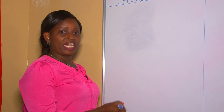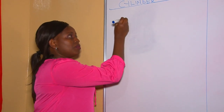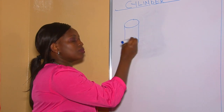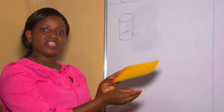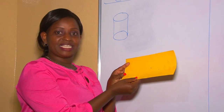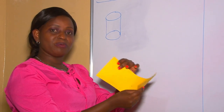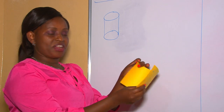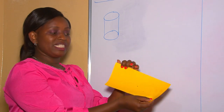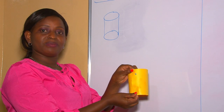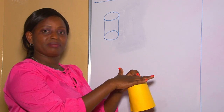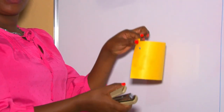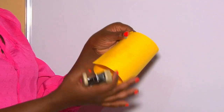A cylinder is of this kind of shape. This is a rectangle, as you can see. When I fold this rectangle, it becomes cylindrical — it was a rectangle, and once I fold it, it becomes cylindrical. It has a top here, and the top part is circular, as you can see, and also the bottom part is circular.